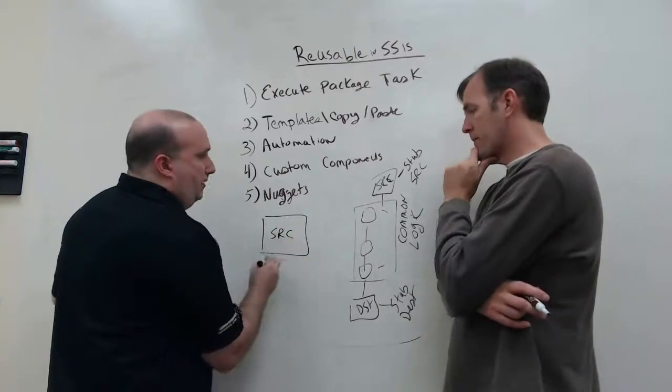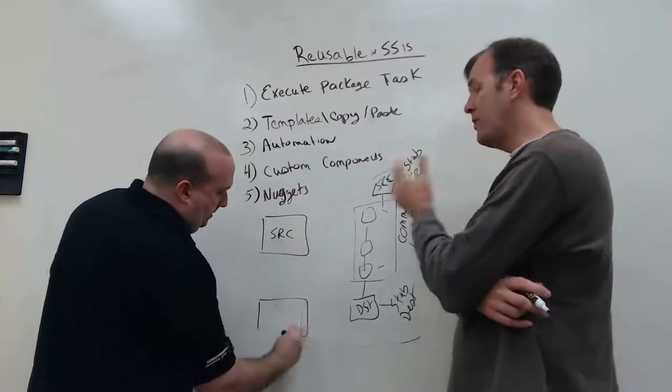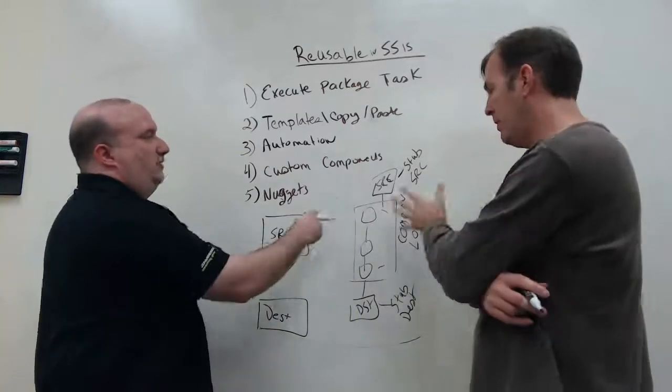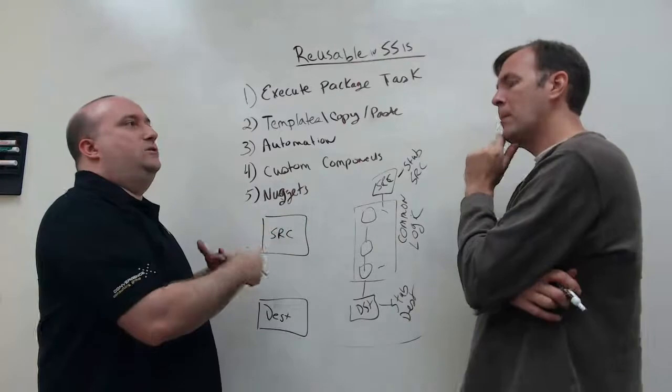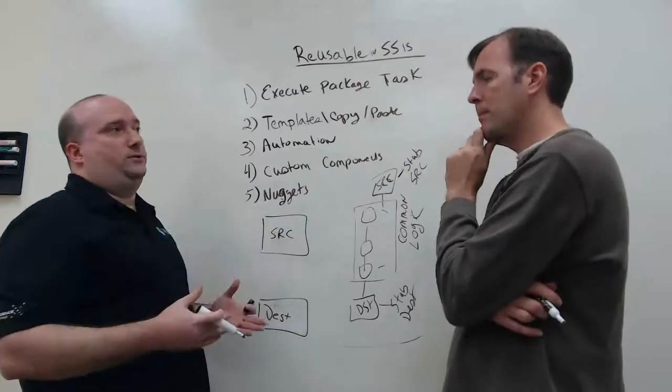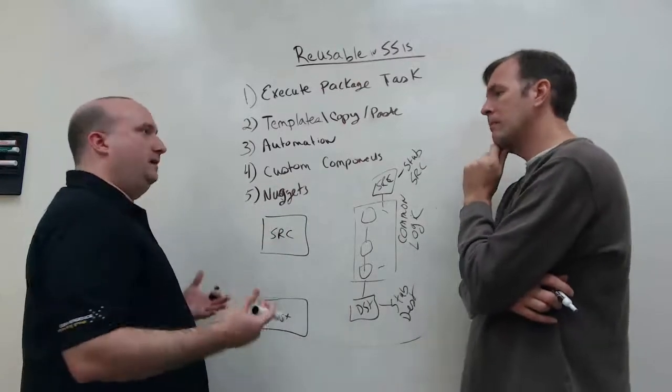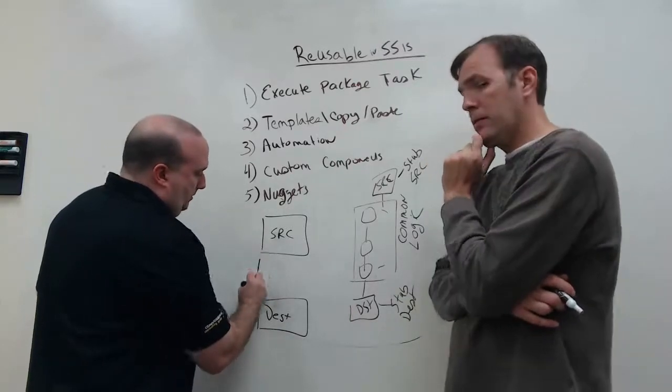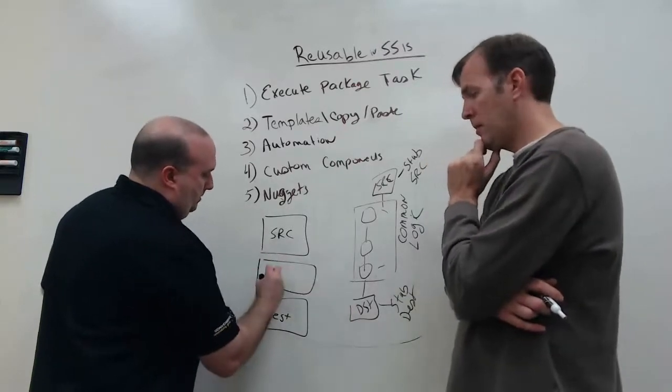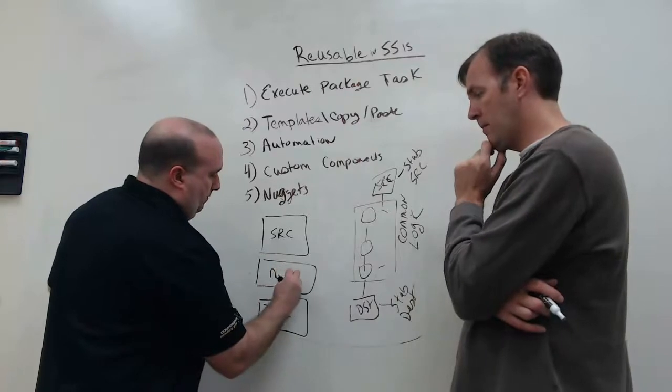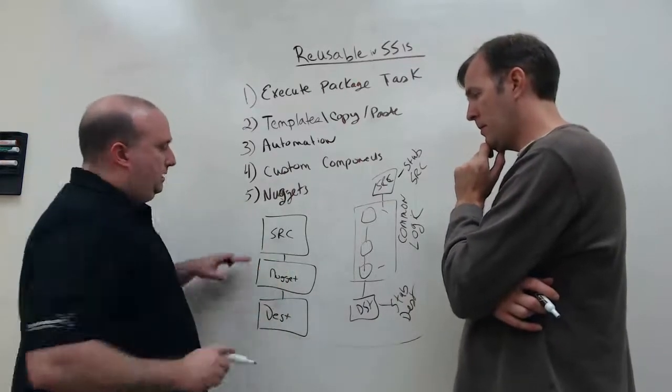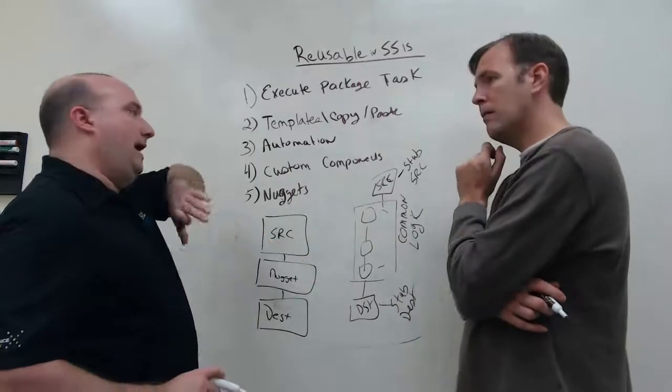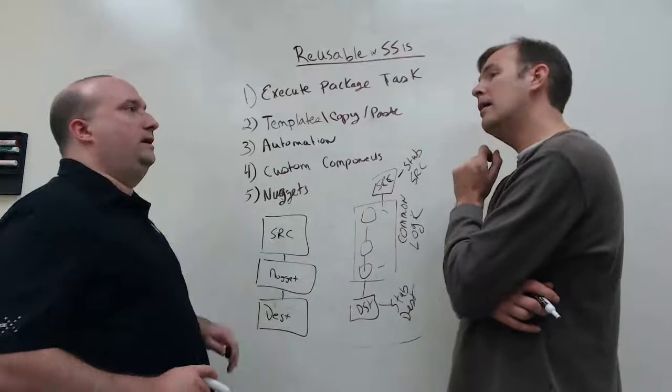And then the nugget in another package. It's a consumer package in this case. A consumer package. I'm going to have a new source. This is the actual source. Yes. This is the real data. This is basically stub data. Stub data that says here's the types of columns you're going to be dealing with, but not the specific information. Okay. So, between this, I would actually insert a nugget transform.